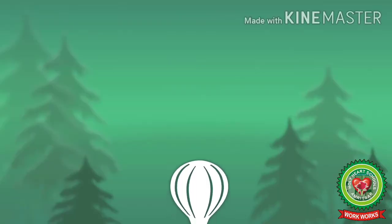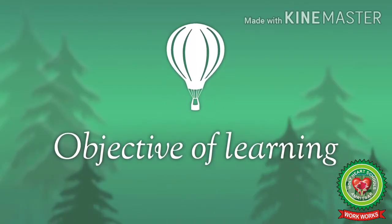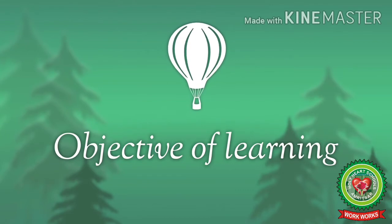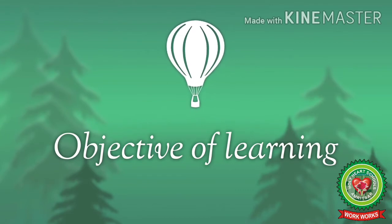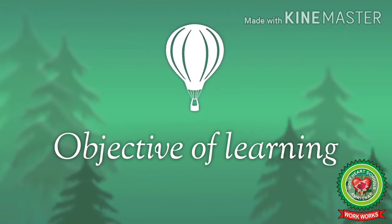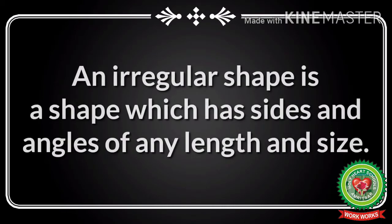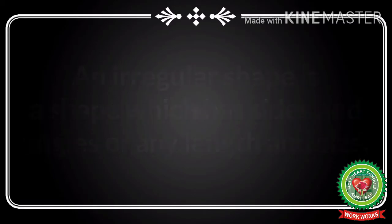The objective of today's learning is to understand how to find out the perimeter of irregular shapes. What are irregular shapes? An irregular shape is a shape which has sides and angles of any length and size.